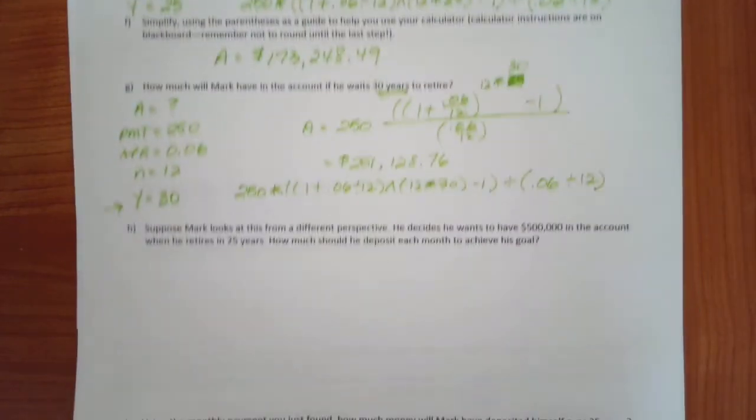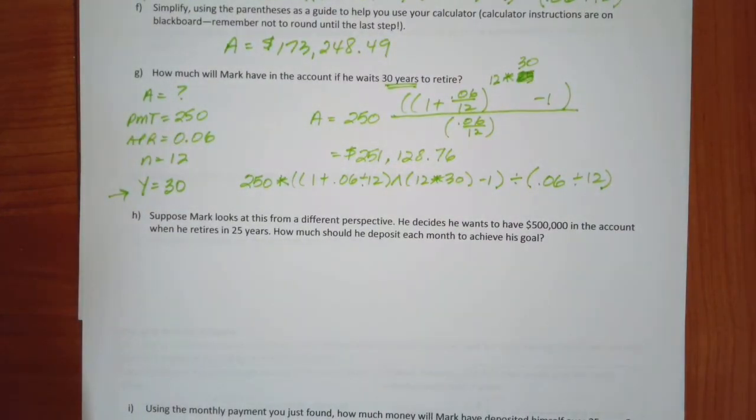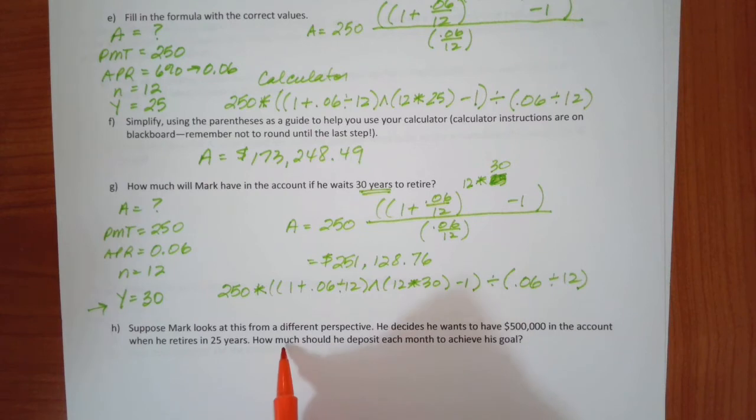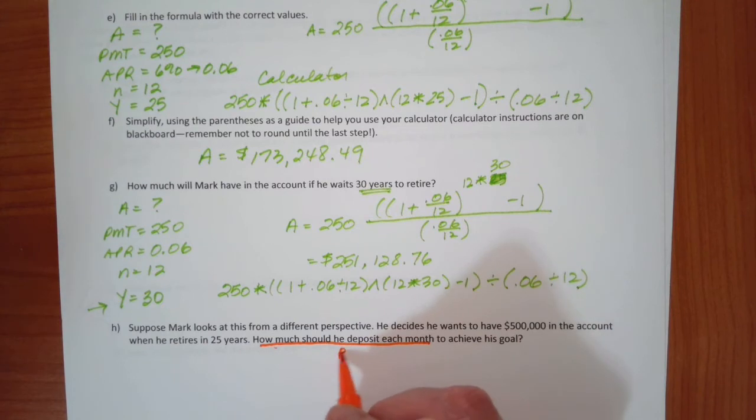Okay, now it says suppose Mark looks at this from a different perspective. He decides he wants to have $500,000 in the account when he retires in 25 years. How much should he deposit each month to achieve his goal? Okay, so now he's got a goal in mind. He wants to know well, how do I get there? Instead of saying this is what I can do every month and let the chips fall where they may, let's see what the end is. Since I want to have a specific amount in the bank, what do I need to do to get there? Okay, well since it's how much should he deposit each month, that means we're going to be solving for the payment.